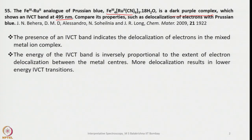More delocalization results in lower energy IVCT transitions. For more delocalization to occur, the energy levels should be very close to matching. In that case, the movement of electrons is quite free, and as a result, delocalization is greater. When delocalization is more, electron transfer is also easier. That is the reason the energy is inversely proportional to the extent of electron delocalization — more delocalization means lower energy IVCT transitions.